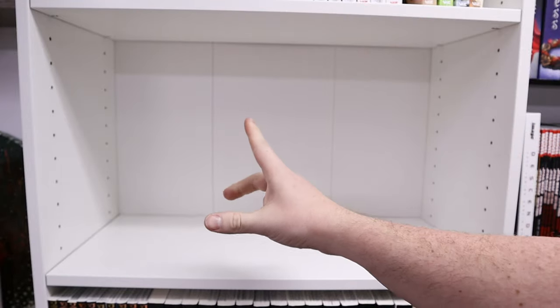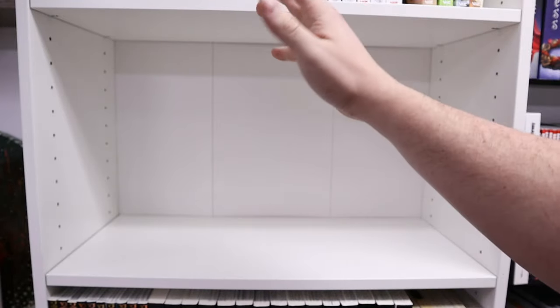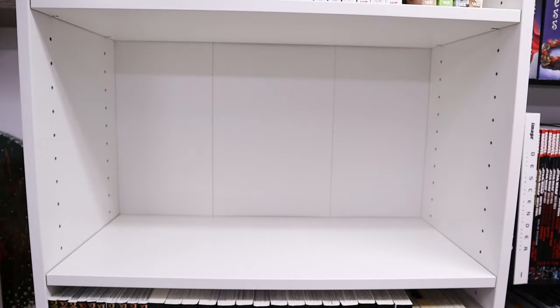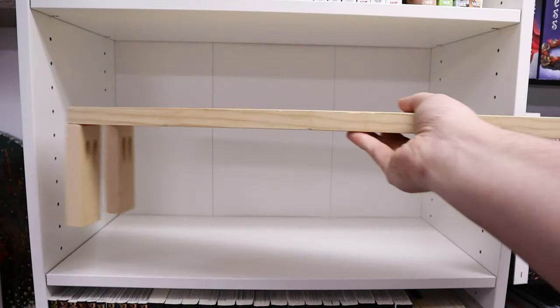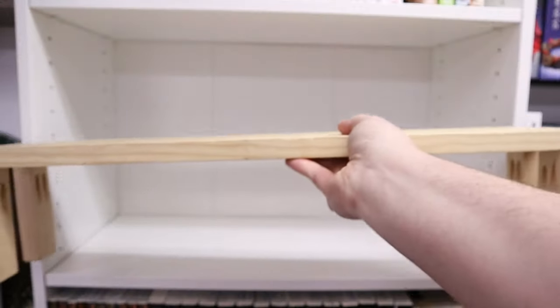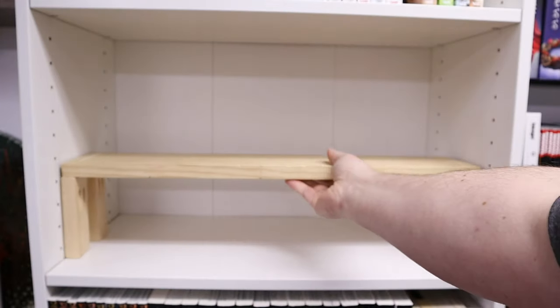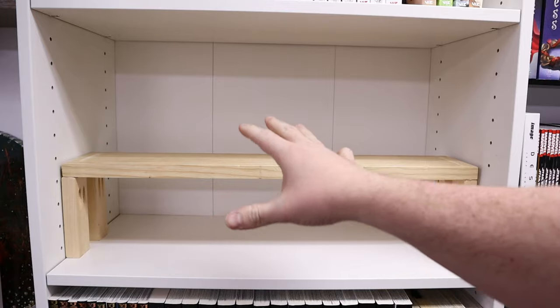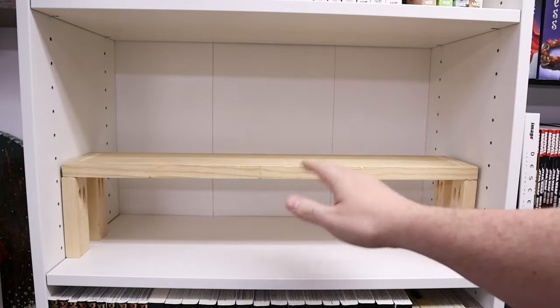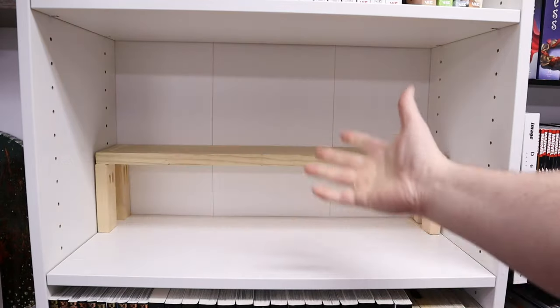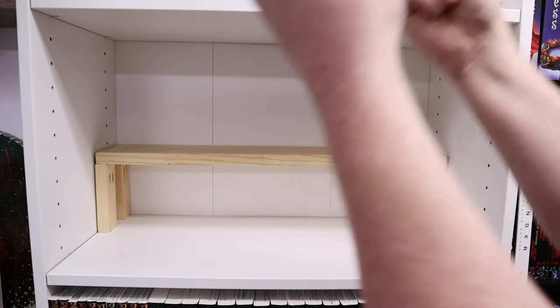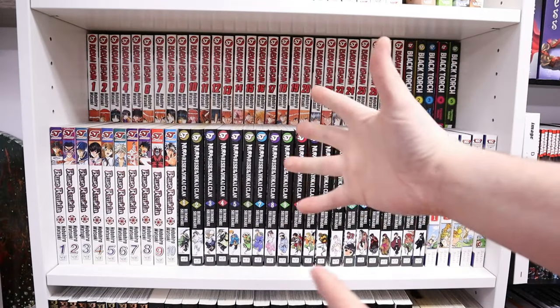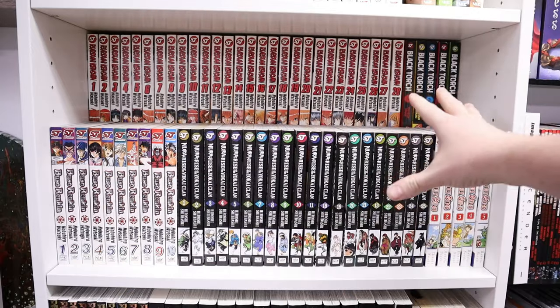How's it going everyone, it's the Manga Sloth here. Today I'm going to be teaching you how to make one of these, a riser shelf. Easy peasy lemon squeezy, and it will allow you to double your manga space on any bookshelf with deep shelves. You go from this to this. Now that looks so much nicer. You got two full rows and you're able to see the spines.